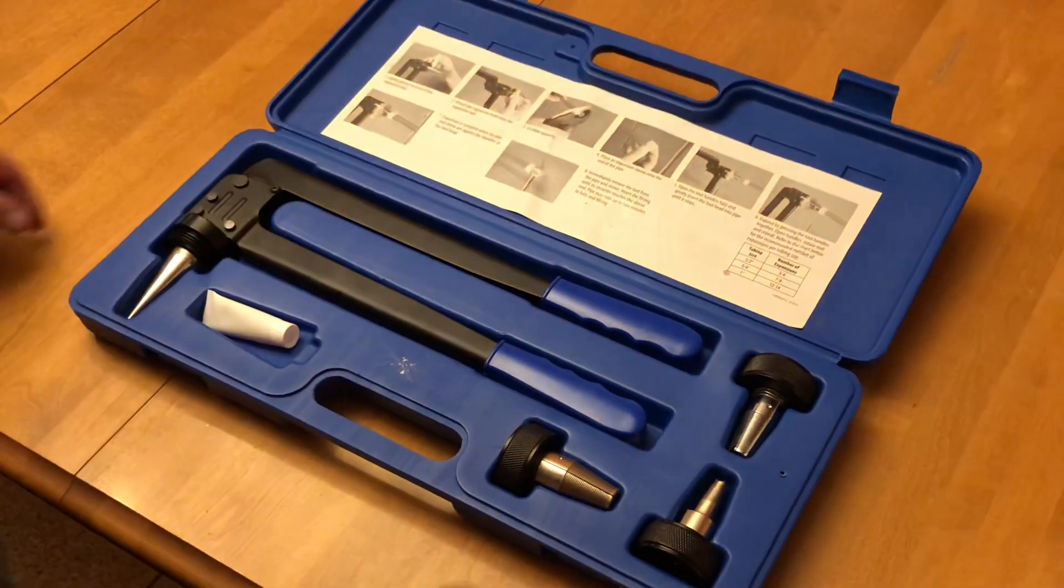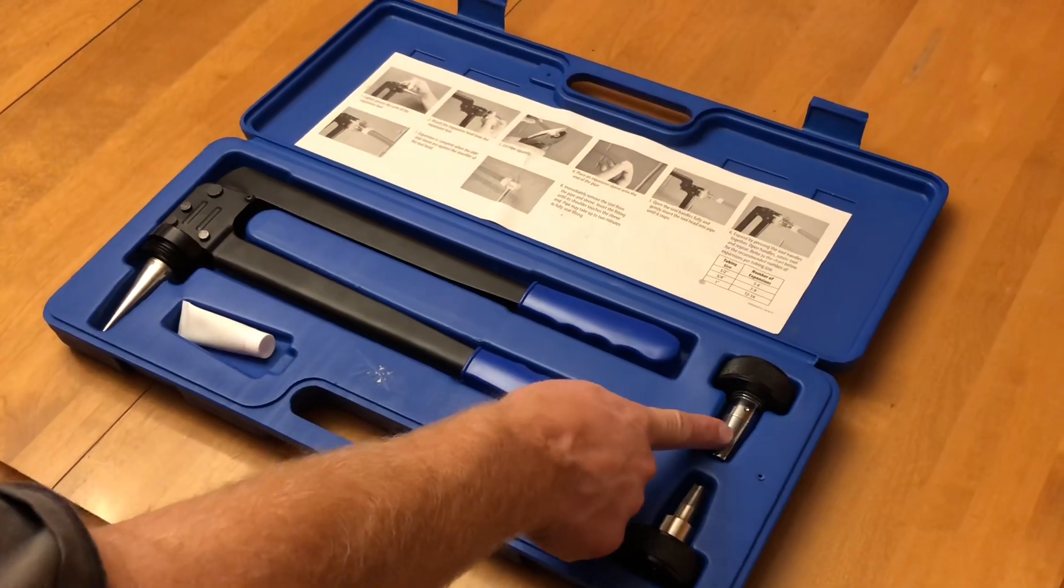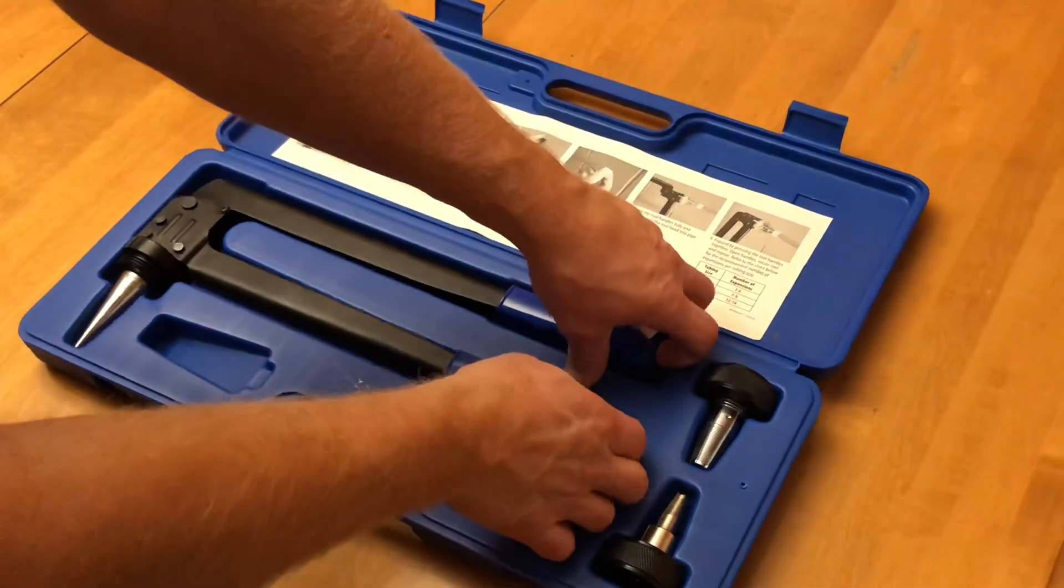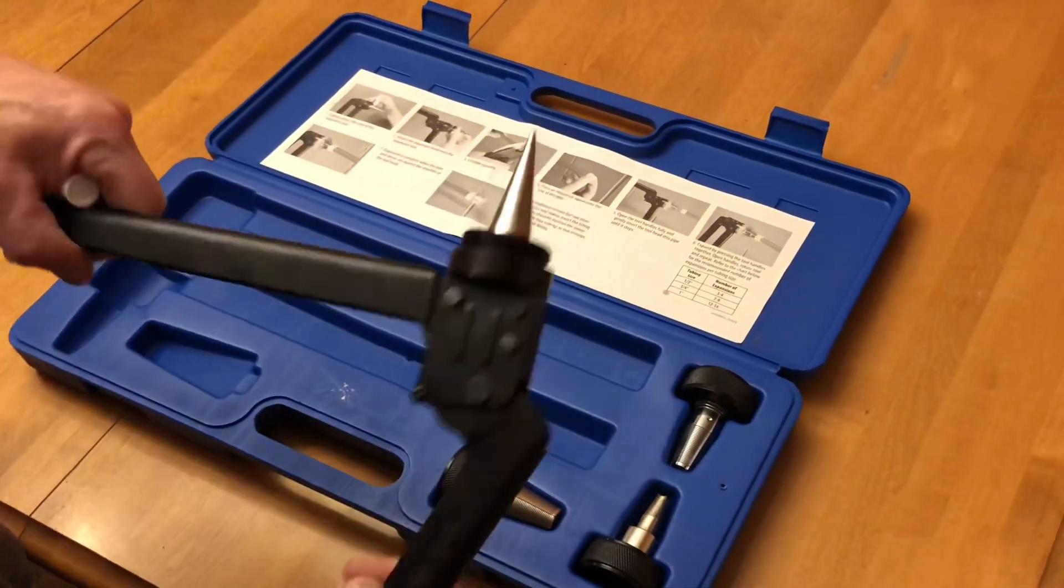So we have the tool here. It comes with three heads. I've got a three-quarter, a one-inch, and a half-inch. It comes with some food-grade grease and the tool here.